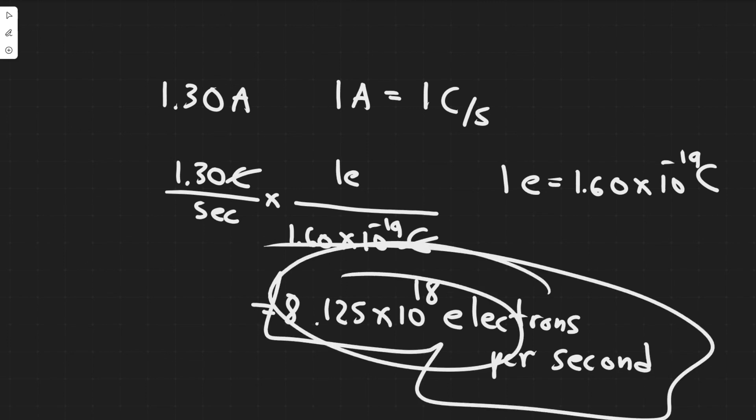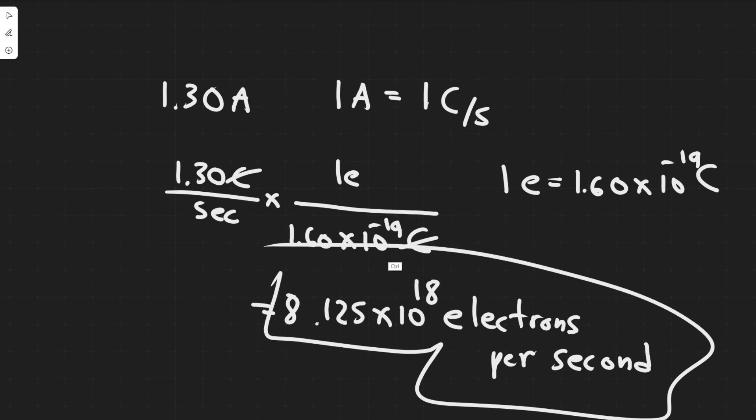This is how many electrons are flowing past any point in the wire per second. This right here is your answer.